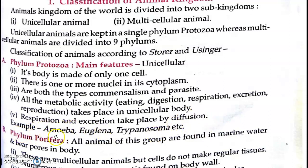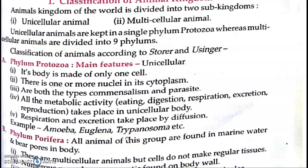Now we will talk about examples of Protozoa. Entamoeba histolytica, Amoeba, Euglena, Trypanosoma, etc. These are unicellular Protozoa. Simply, we can say these are the Protozoa. Now come to the next phylum.